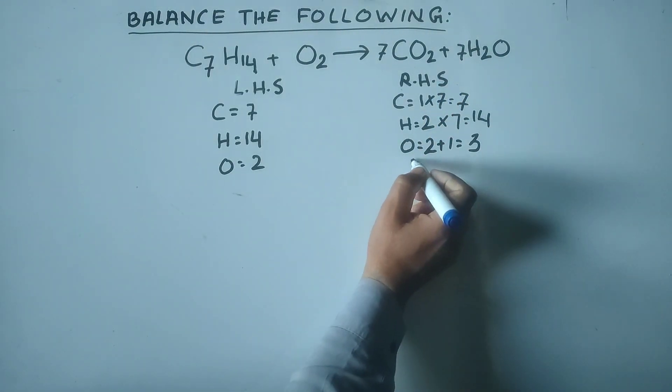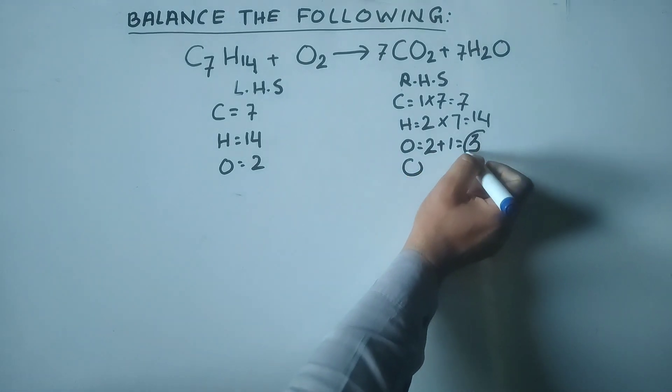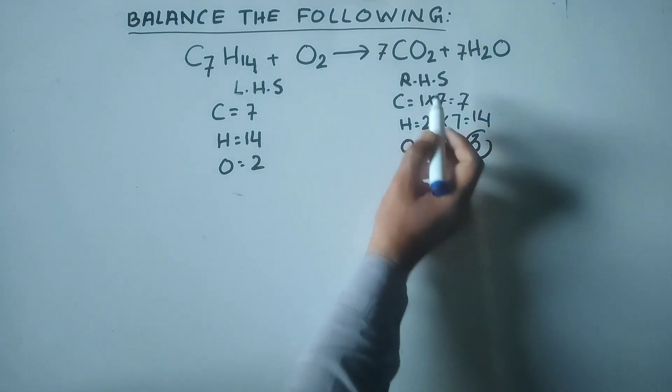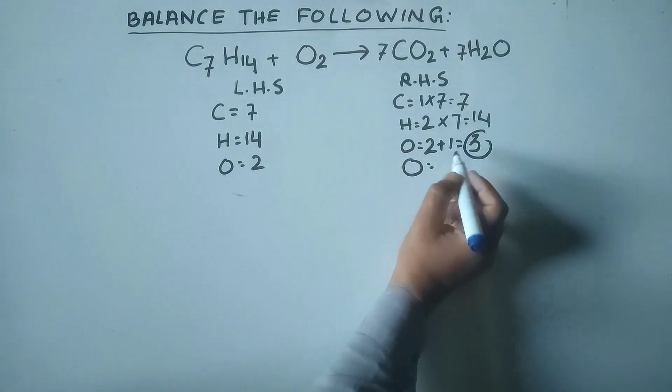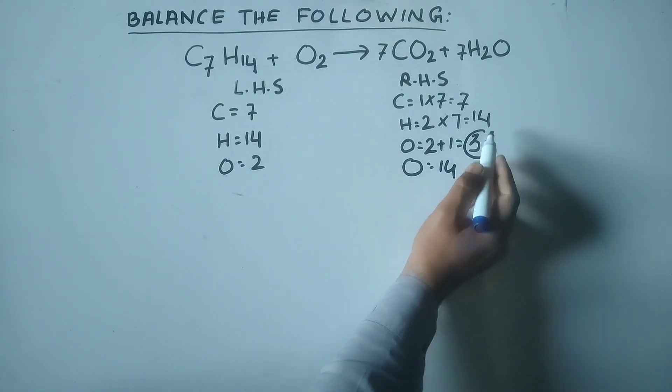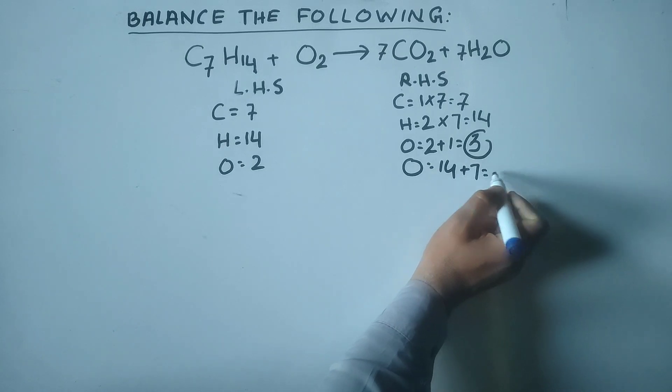Oxygen atoms, we will count again. There are 2 oxygen atoms here and 7 oxygen atoms here, total oxygen atoms 21.